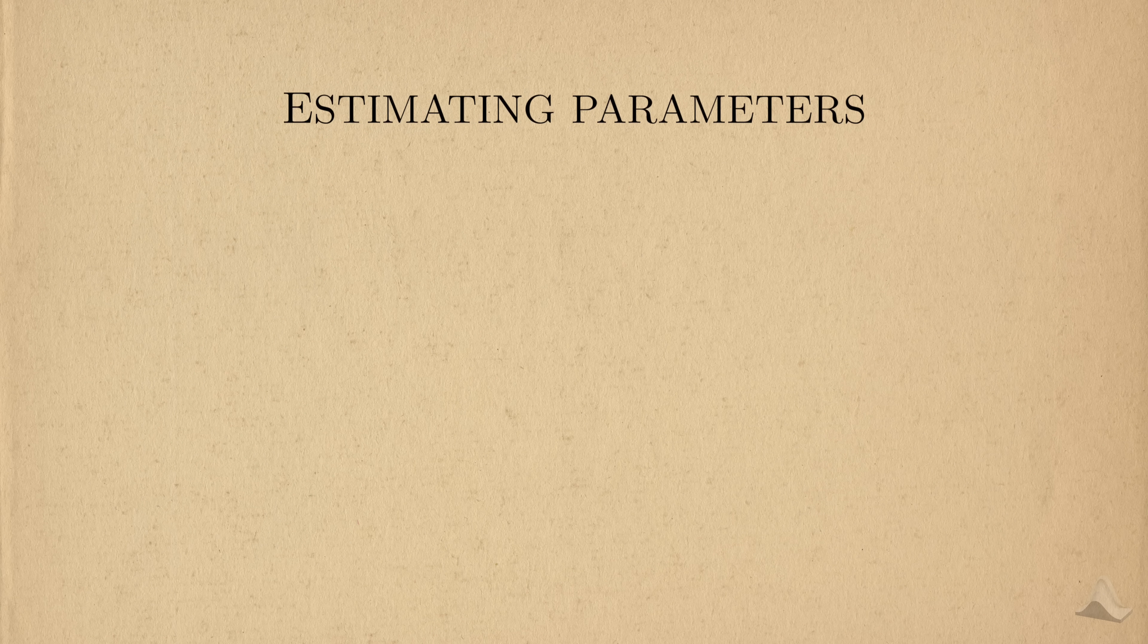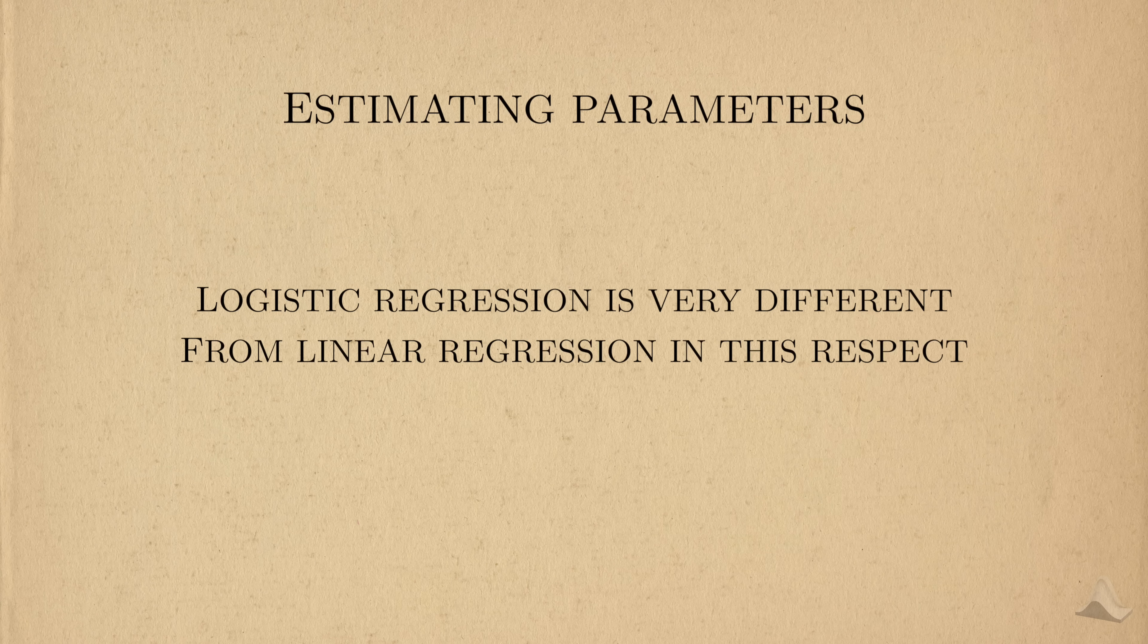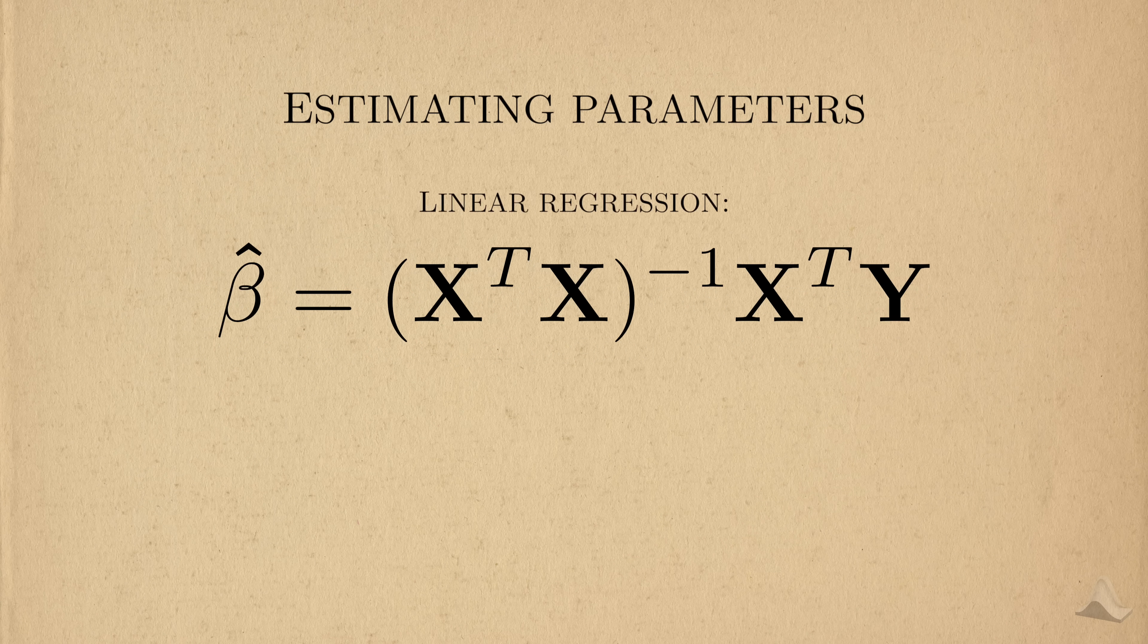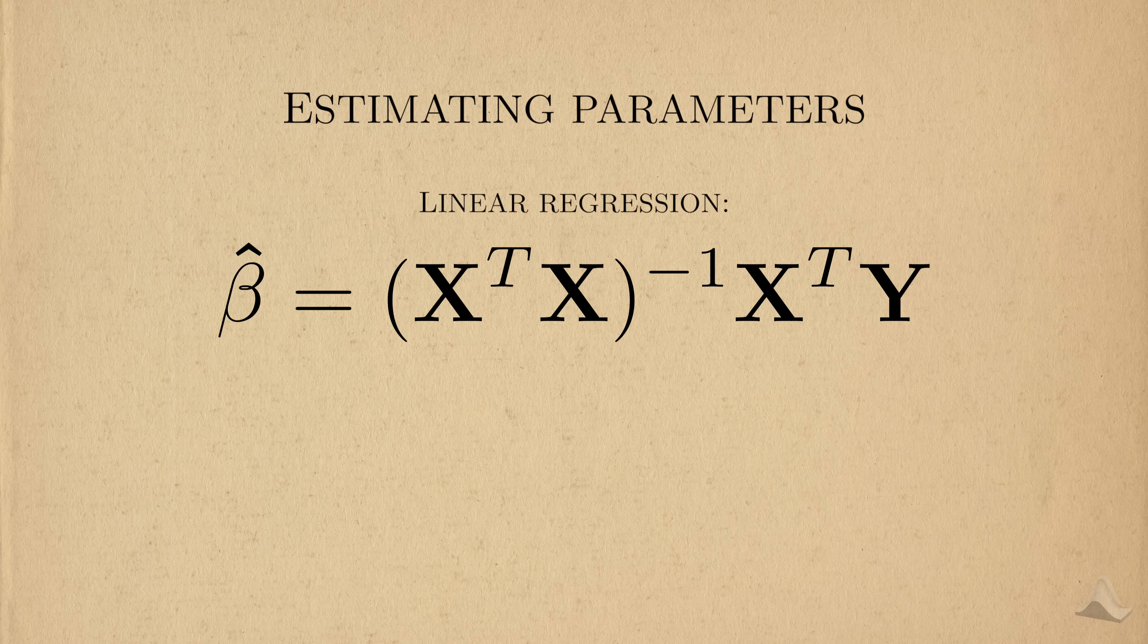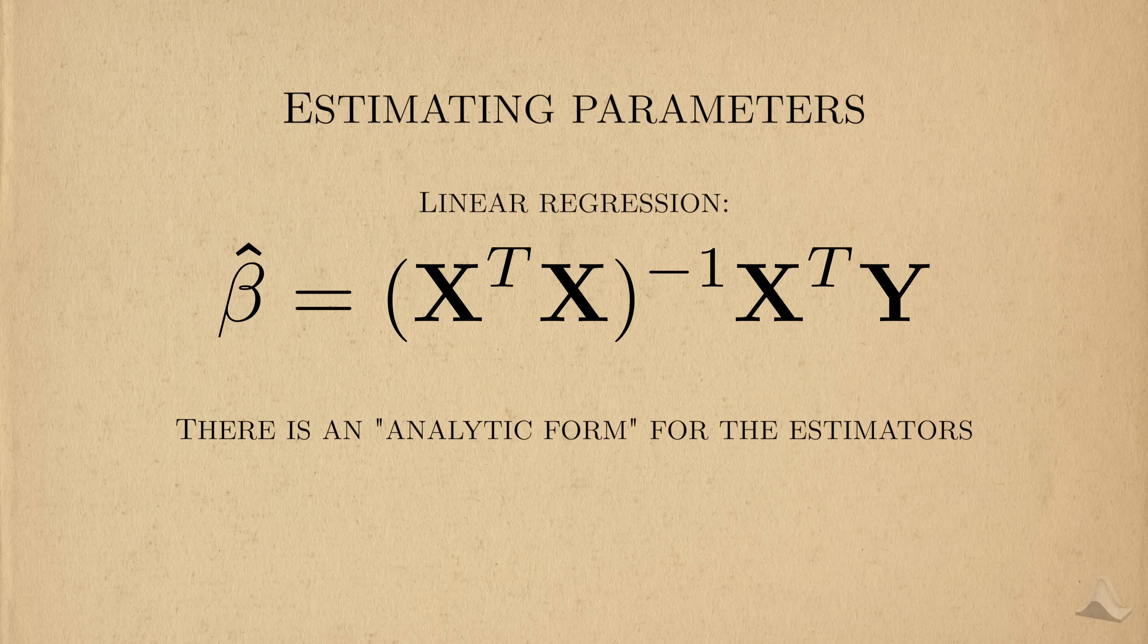You might wonder how we estimate the model coefficients for logistic regression after you collect the data. Unfortunately, logistic regression is very different from linear regression in this respect. With linear regression, we have a nice equation that we can plug the data into to directly estimate the parameters. This was the famous ordinary least squares or OLS estimators for linear regression. That is to say, the OLS estimators have an analytic form. There's an equation that we can write and see and solve.